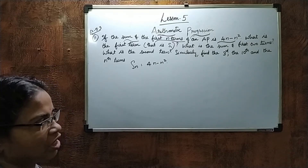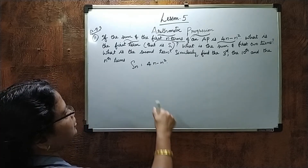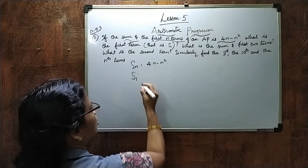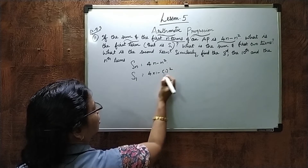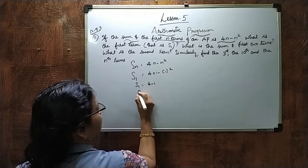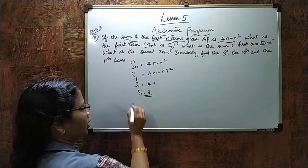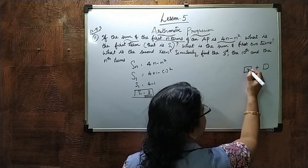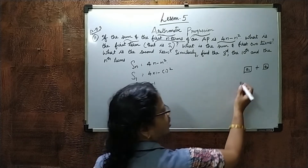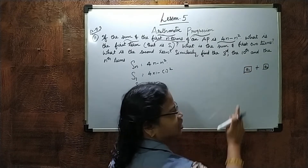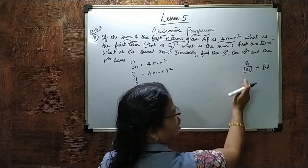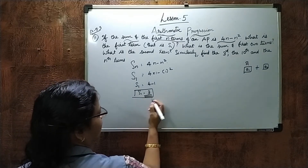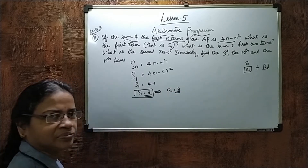SN is given as 4N minus N squared. For the first term, we find S1 by substituting N equals 1: S1 equals 4 into 1 minus 1 squared, which is 4 minus 1 equals 3. Since the sum of only one term is the term itself, A1 equals S1 equals 3.